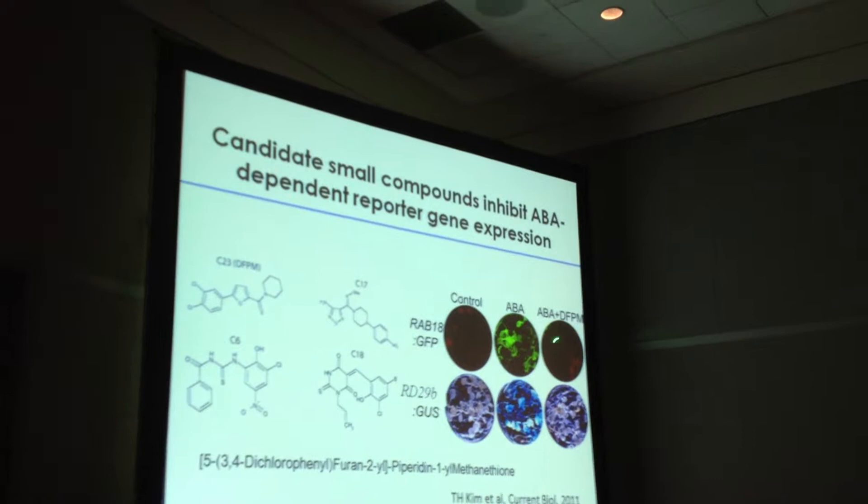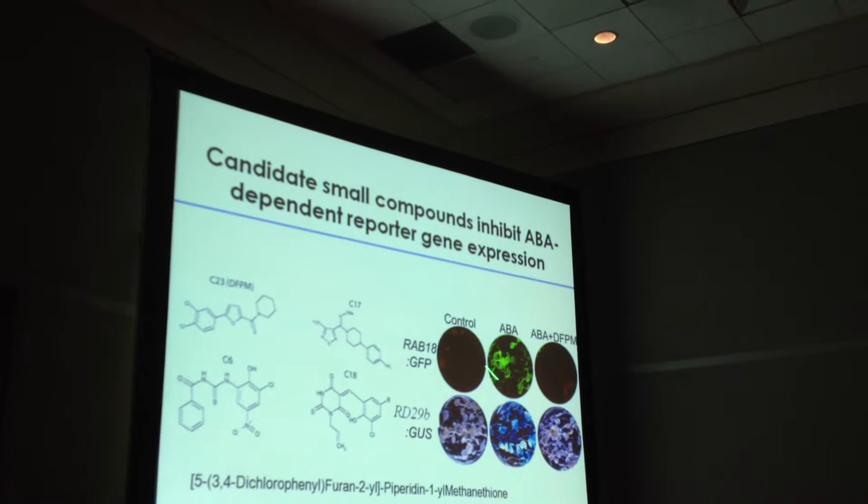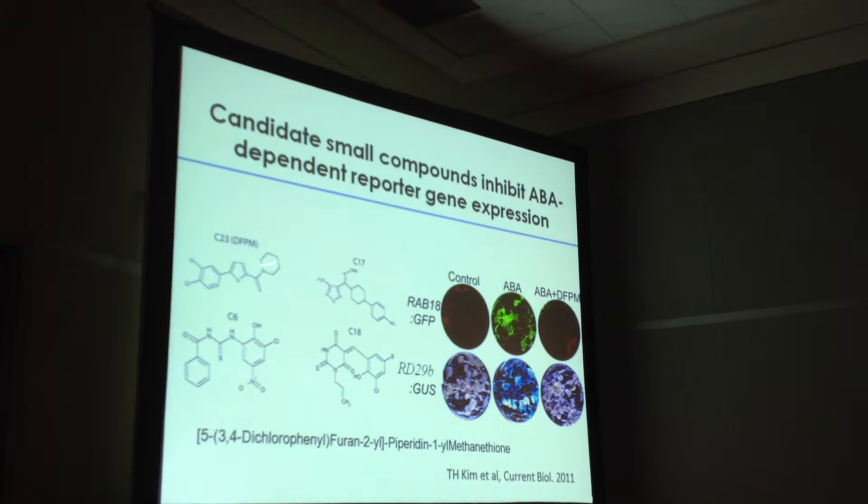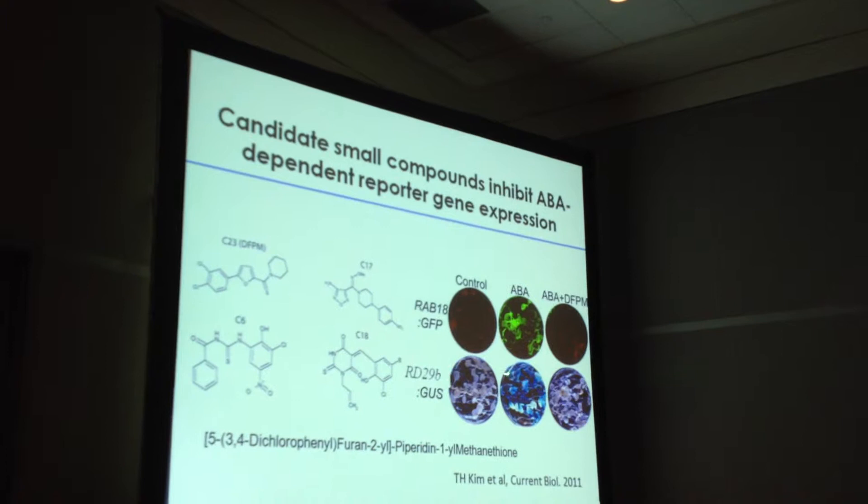After screening 9,500 compounds, we found four compounds that had this effect — ABA induces gene expression, and one of them inhibits this. The compound I'm talking about today is a three-ring structure with a phenyl, furan, and piperidine ring, and we call it DFPM. Here's another ABA-induced reporter, RD29B, and again, DFPM exposure inhibits that ABA induction.